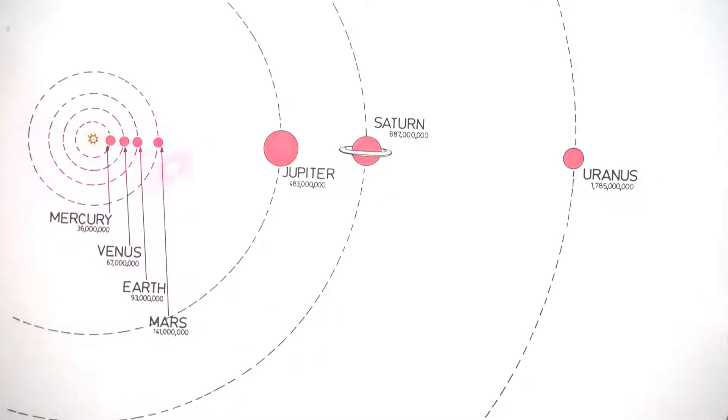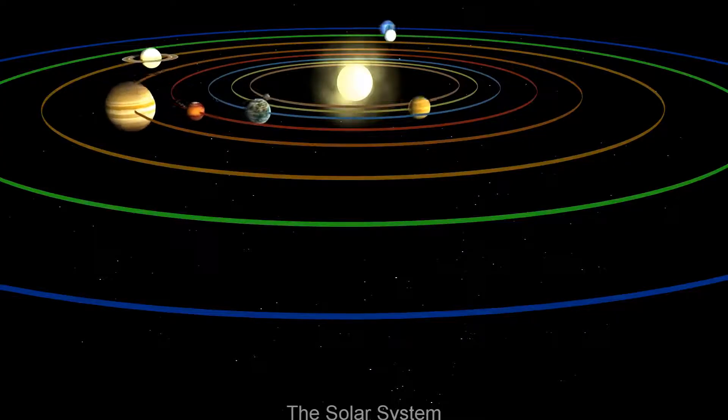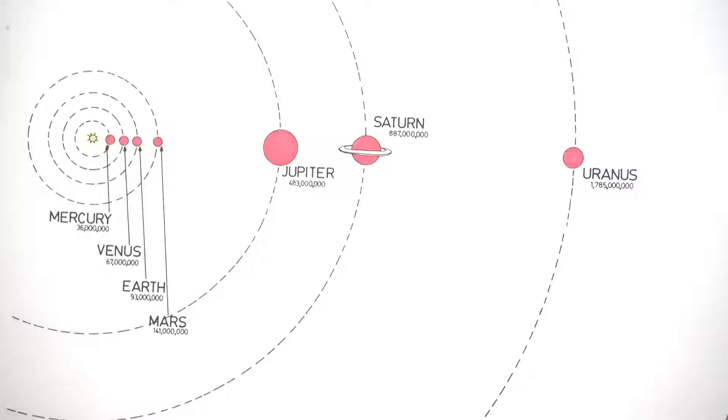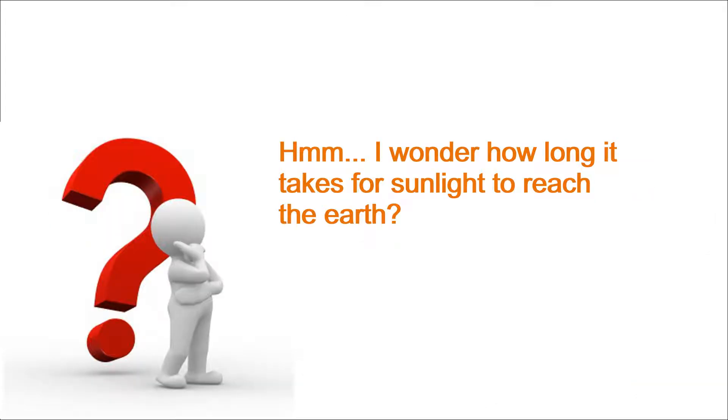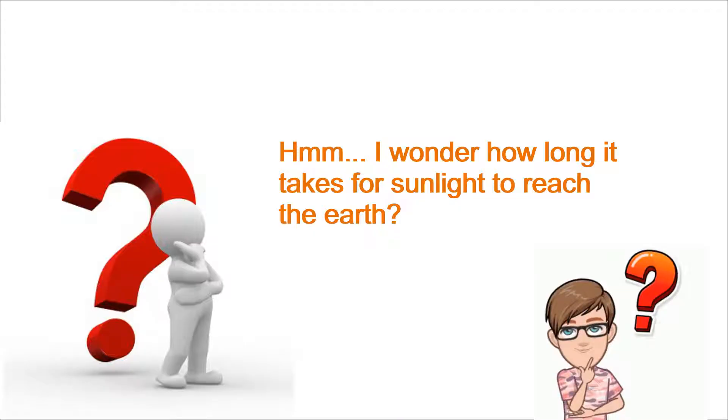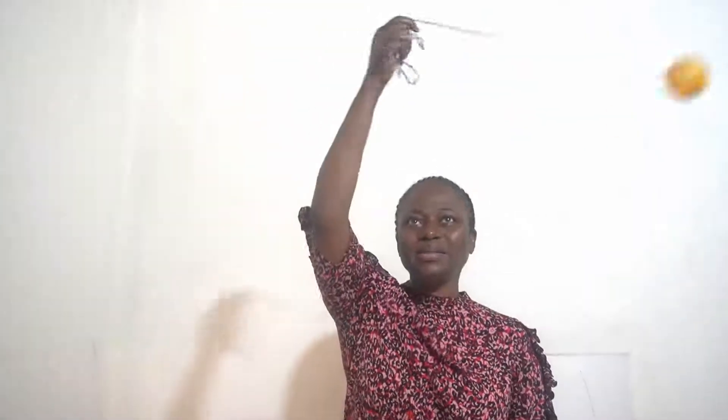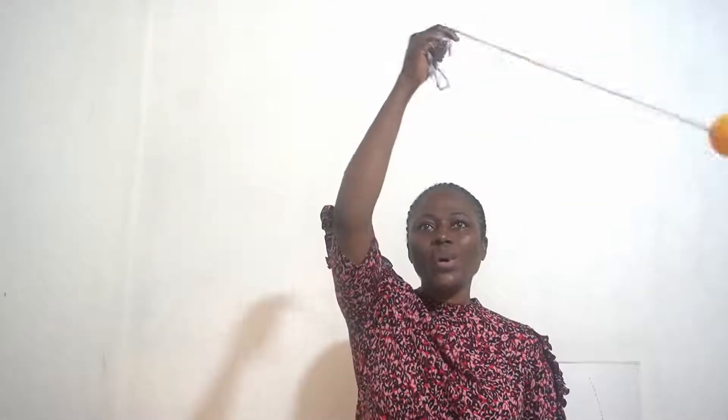And then we have all the other different planets going round and round the Sun. How long does it take the light from the Sun to reach us on the Earth? That is something for you to find out. Now all the planets around the Sun go round and round the Sun like this.